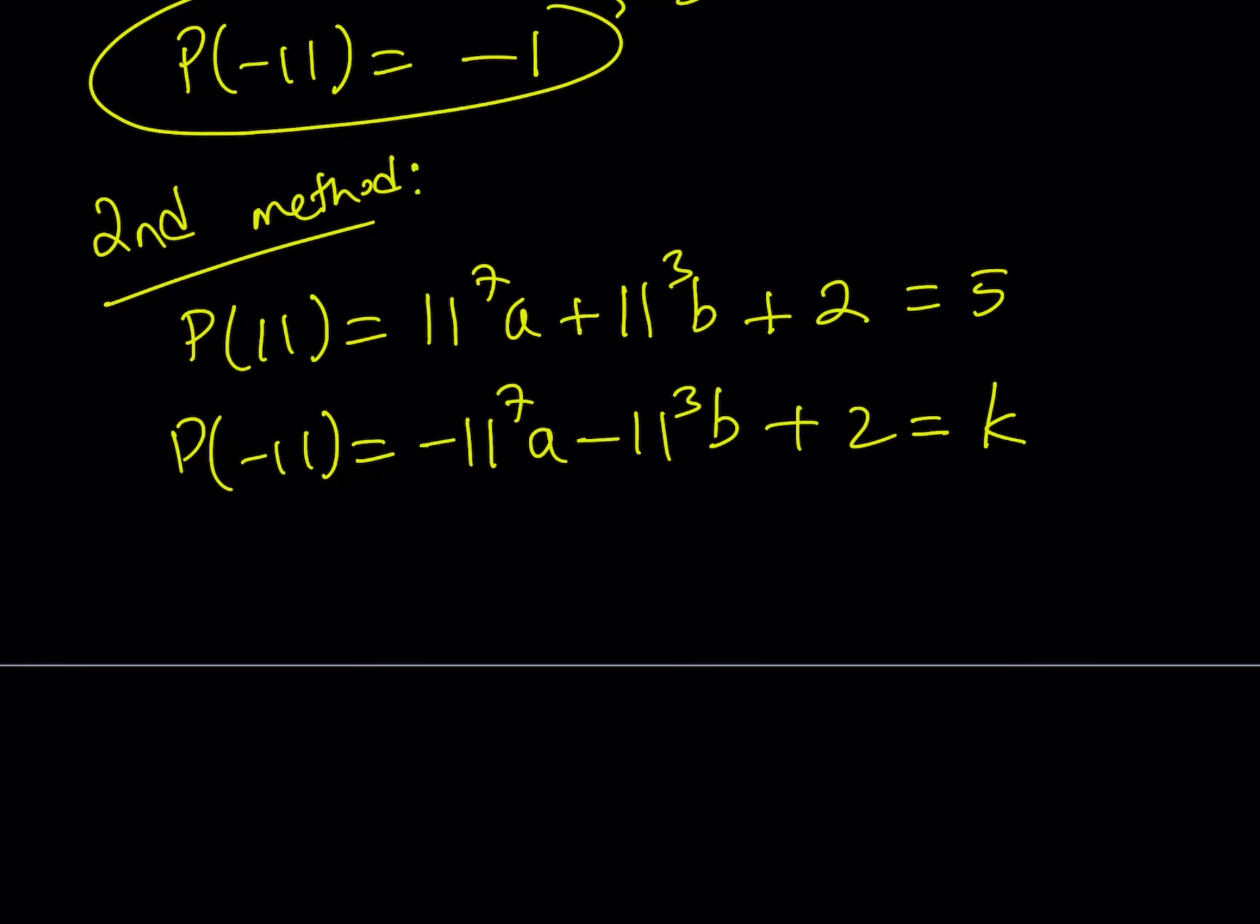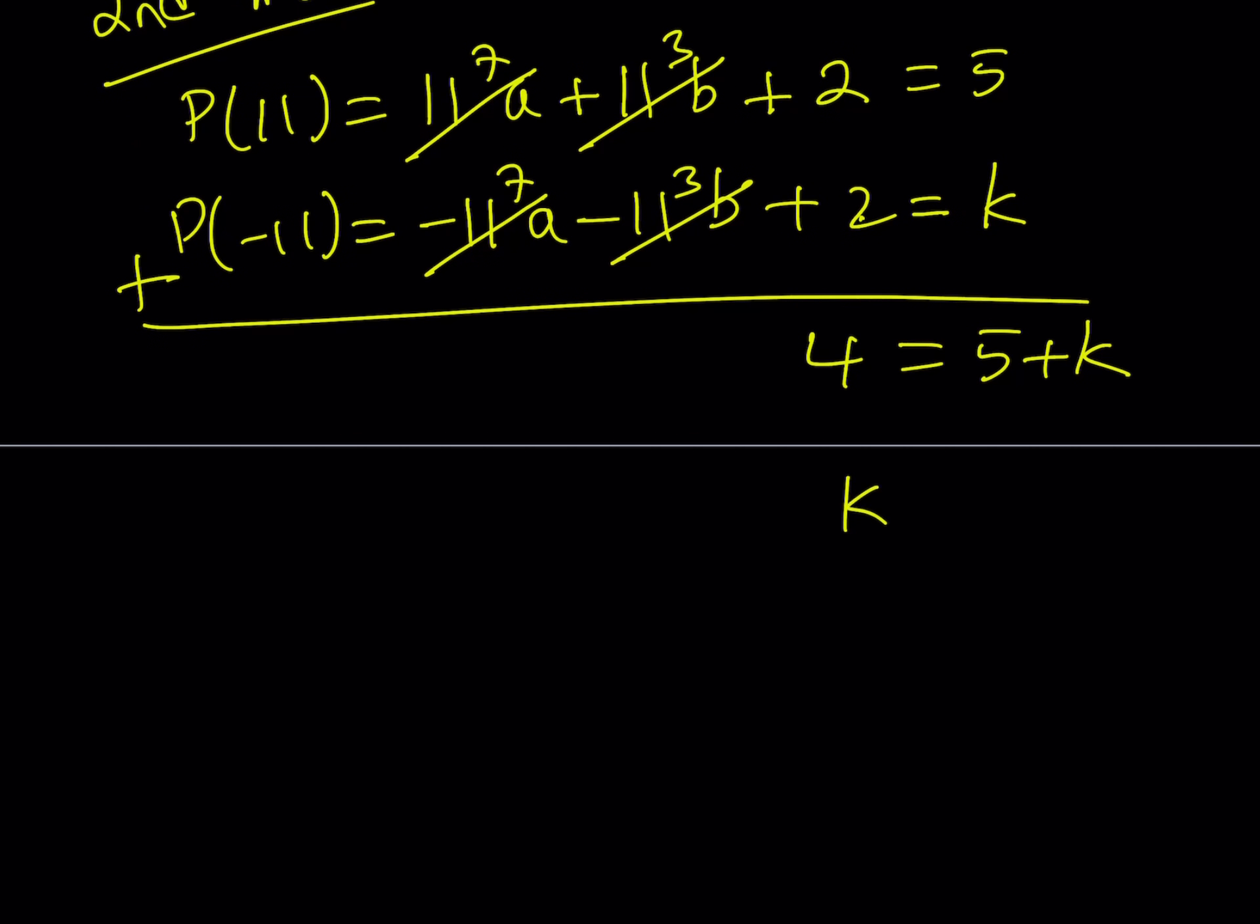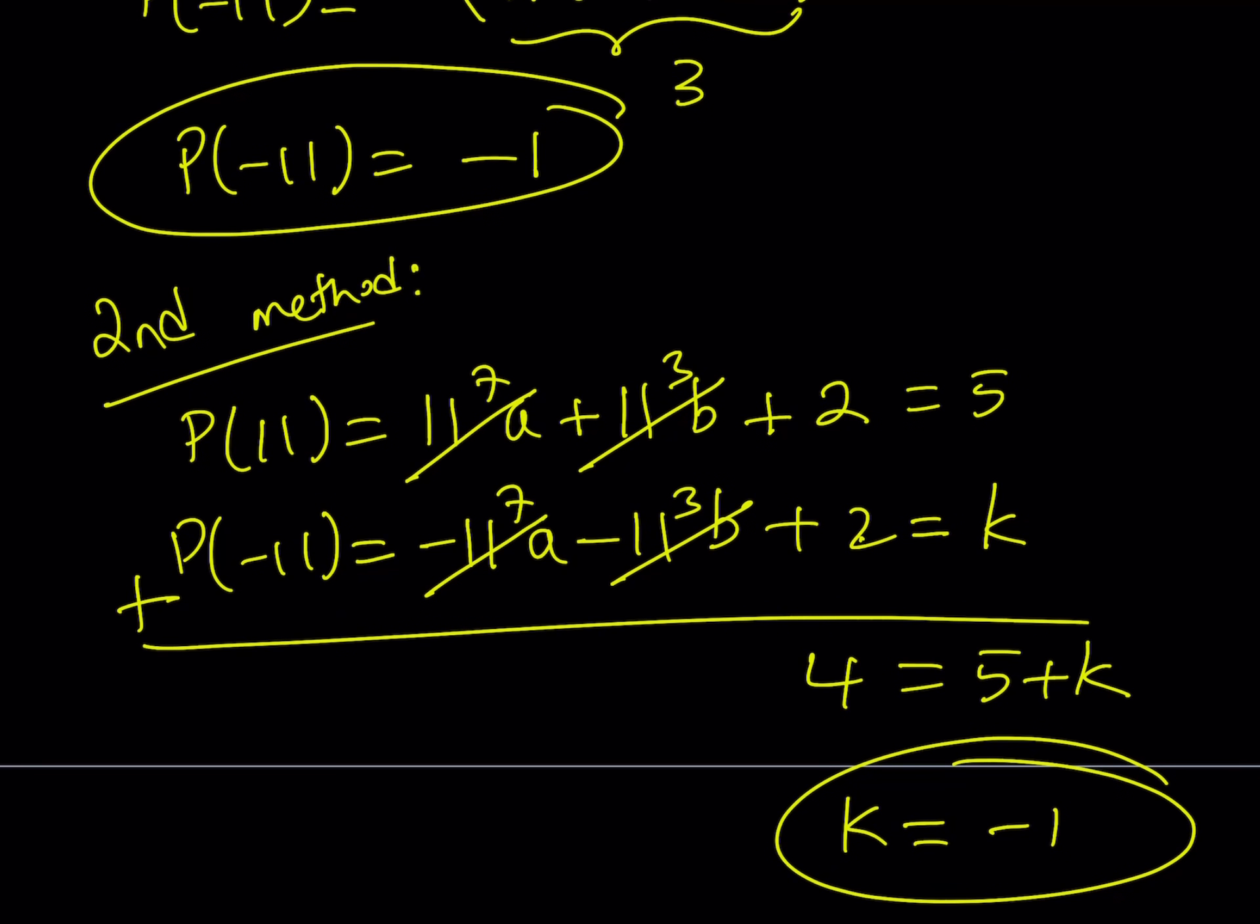So in order to find the answer, I'm looking for K basically. I'm going to be adding these two equations. When I add them, these two are opposites that are going to cancel out. These two are opposites that are going to cancel out. 2 plus 2 is equal to 4 and 4 is equal to 5 plus K. Remember that I'm looking for K and from here, K is equal to negative 1. Therefore, that is the answer.